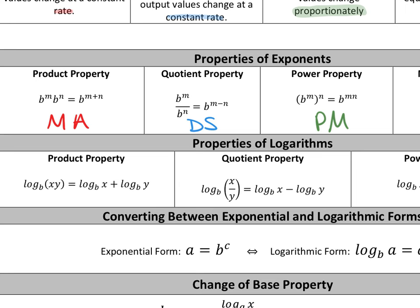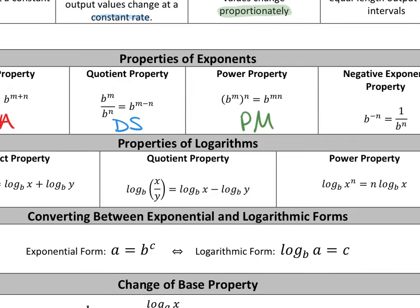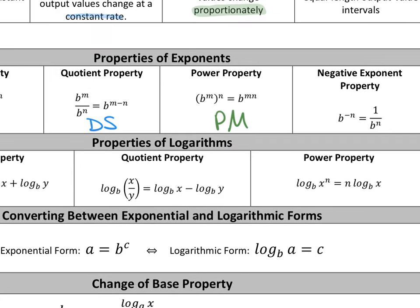The negative exponent property: the AP test and all math conventions don't like answers with negative exponents, so we clean them up. Take the term with the negative exponent and move it to the opposite side of a fraction bar. If it's negative in the bottom, bring it to the top; if it's negative in the top, move it to the bottom — just change the sign.